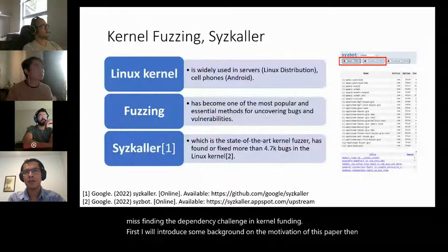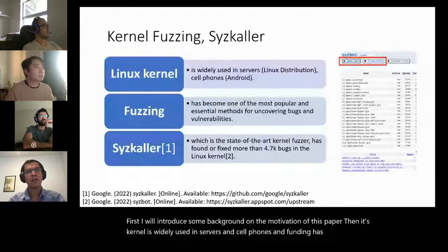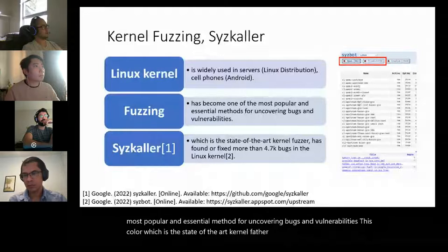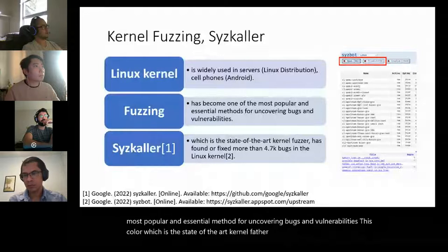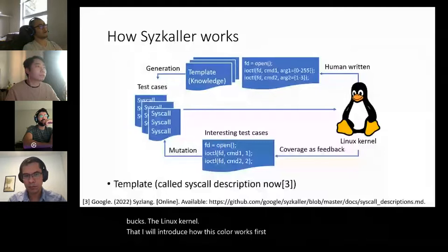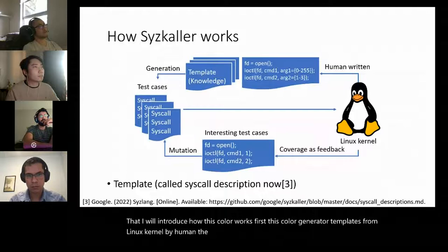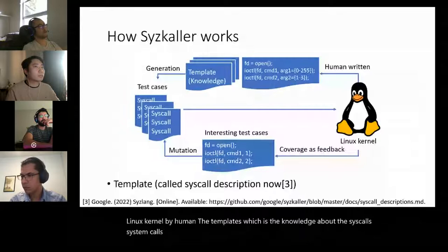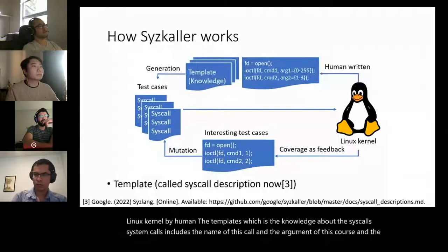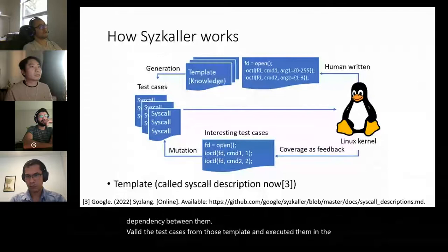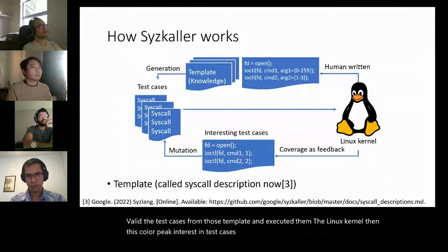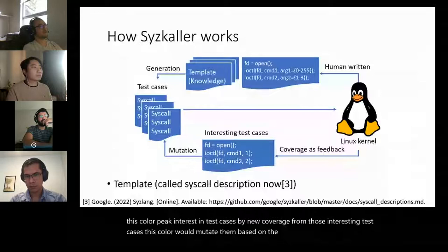The Linux kernel is widely used in servers and cell phones, and fuzzing has become one of the most popular methods for uncovering bugs and vulnerabilities. Syzkaller, the state-of-the-art kernel fuzzer, has found and fixed more than 4,700 bugs in the Linux kernel. Syzkaller generates templates from the Linux kernel — the templates describe system calls including their names, arguments, and dependencies between them. It generates valid test cases from those templates, executes them in the Linux kernel, and picks interesting test cases based on new coverage to mutate and generate more test cases.